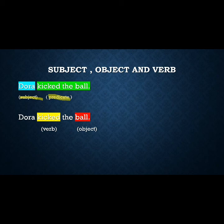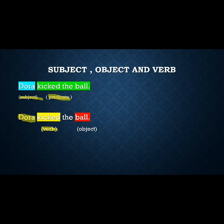The verb 'kicked' explains what was done to the ball, so Dora is the subject here. In active and passive voice, you should know what the subject is, what the object is, and what the verb is. The verb explains what was done to the object.